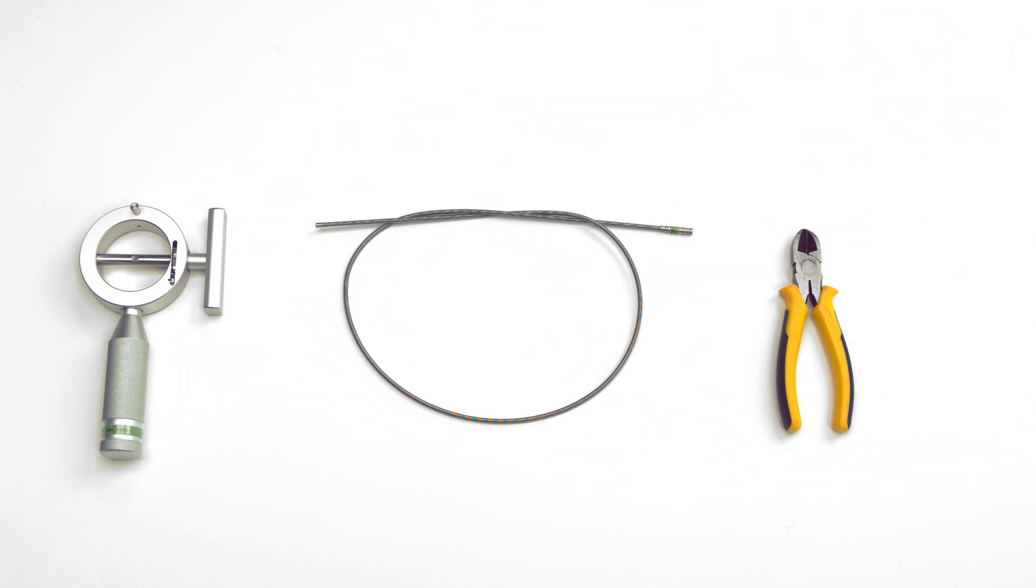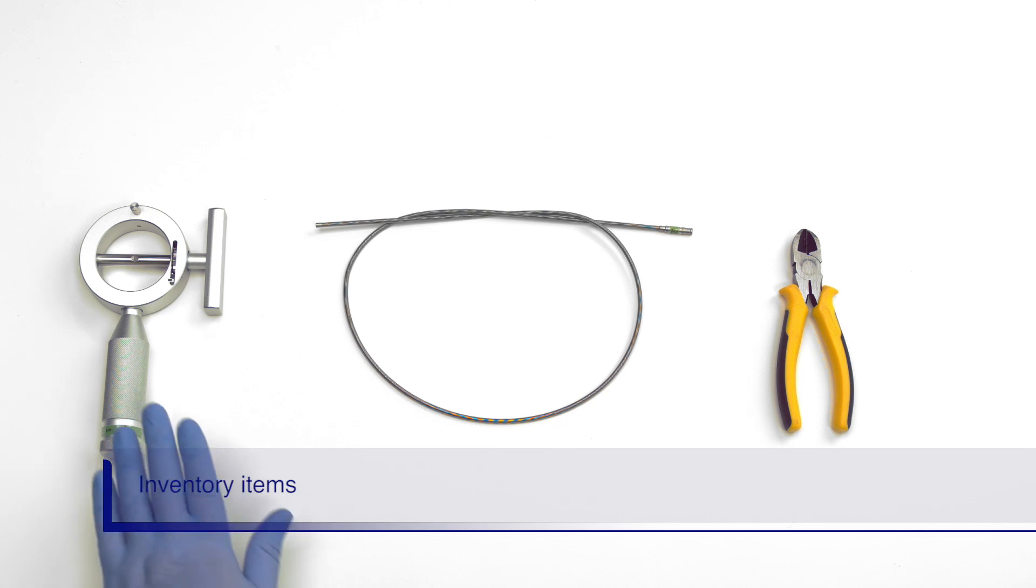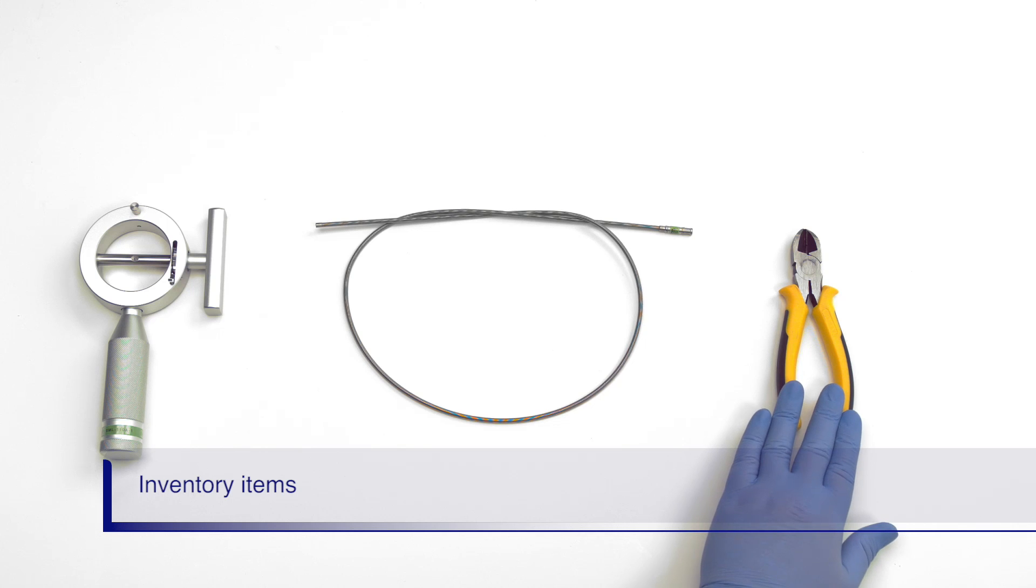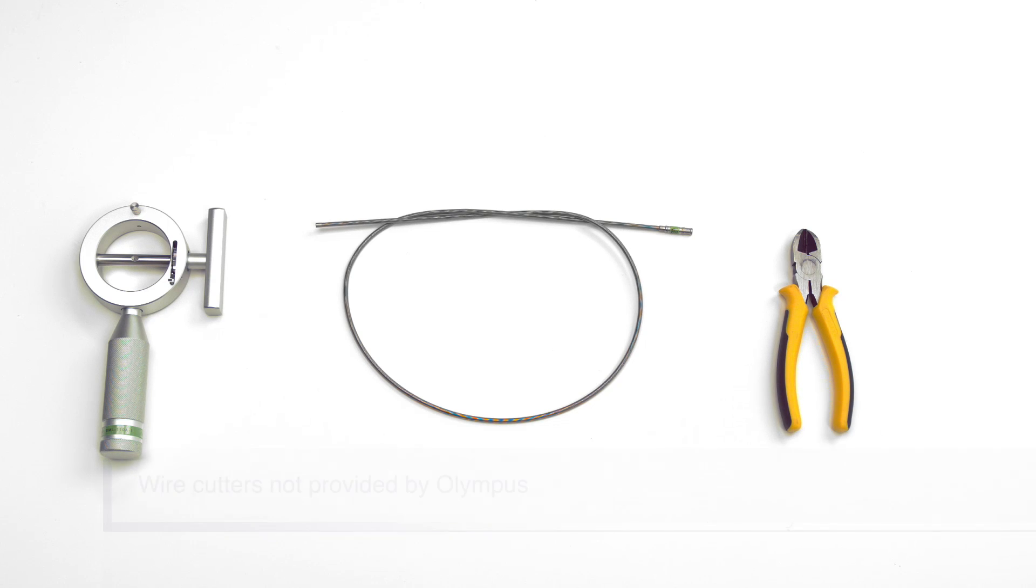Before we review the procedure for the emergency lithotriptor handle, we will need to inventory our supplies. You will need the emergency lithotriptor handle, coil sheath, and wire cutters. The wire cutters need to be of good quality. Bandage scissors will not work.